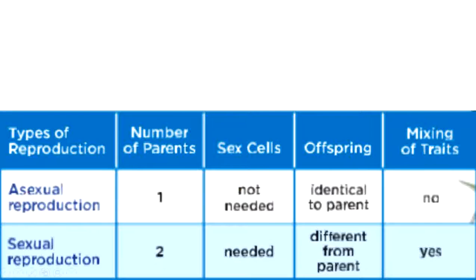Comparing the two types: asexual reproduction involves only one parent, no sex cells are needed, and the offspring is identical to the parent with no mixing of traits. Sexual reproduction involves two parents, sex cells are needed, and the offspring is different from the parents because traits from both parents are passed to the offspring.